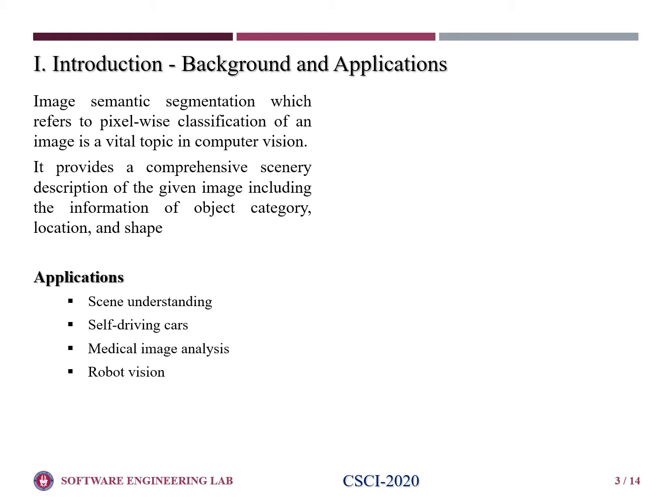Image semantic segmentation, which refers to pixel-wise classification of an image, is a vital topic in computer vision. It provides a comprehensive scenario description of the given image, including the information of object category, location, and shape.